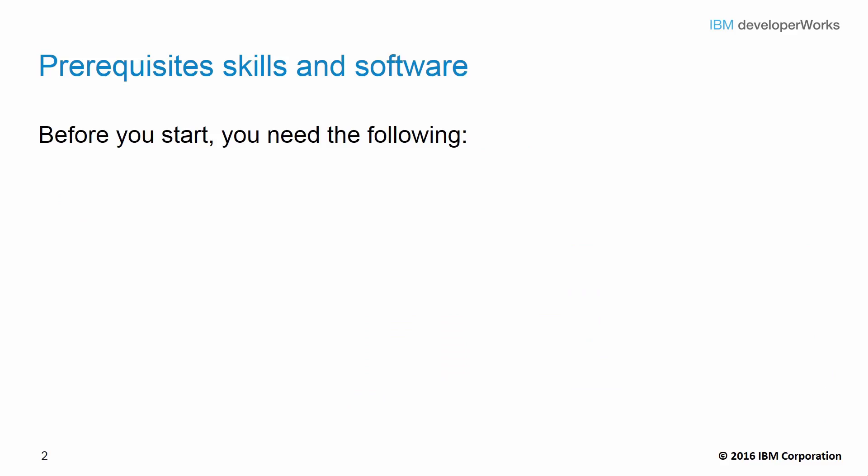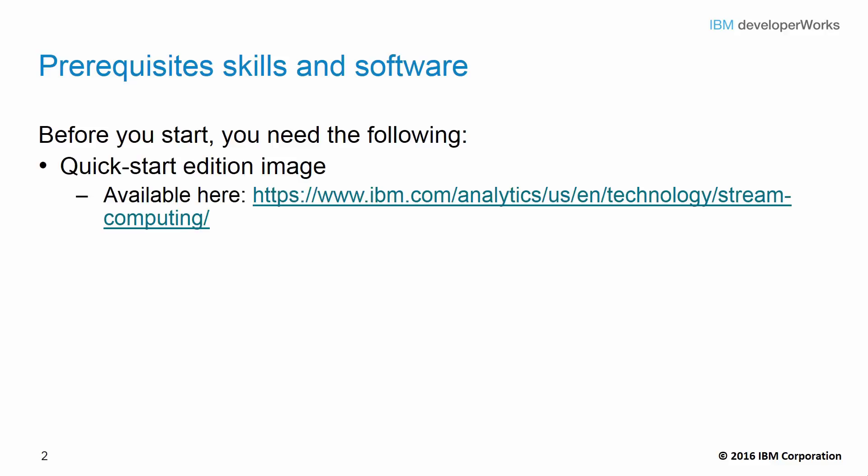The easiest way to get started with IBM Streams is to get the Quick Start Edition. You can install it natively on your Linux distribution, but for simplicity's sake, I recommend downloading the virtual machine image, which you can find here. When you go to the site, you'll see that you have two options to choose from: a VMware image or a VirtualBox image.